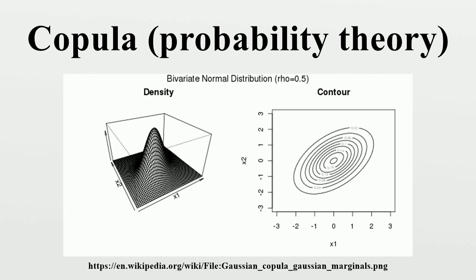Empirical copulas: When studying multivariate data, one might want to investigate the underlying copula. Suppose we have observations from a random vector with continuous margins. The corresponding true copula observations would require knowing the marginal distribution functions, which are usually not known. Therefore, one can construct pseudo-copula observations by using the empirical distribution functions instead.